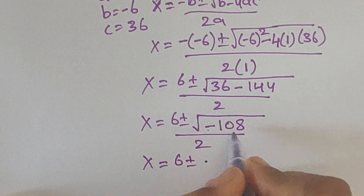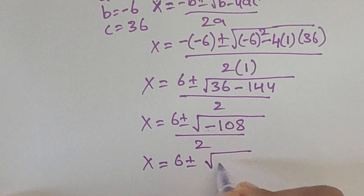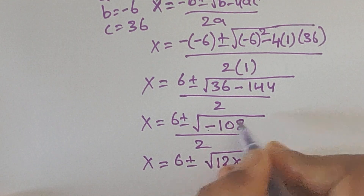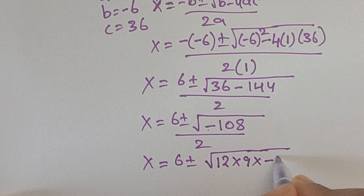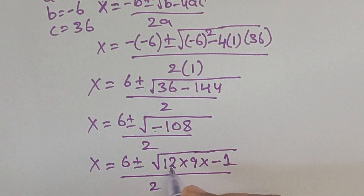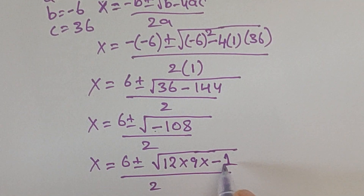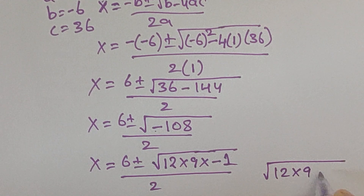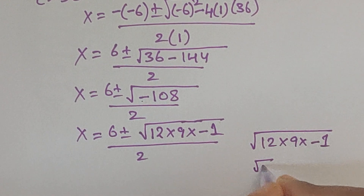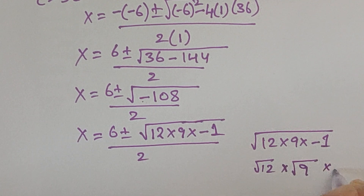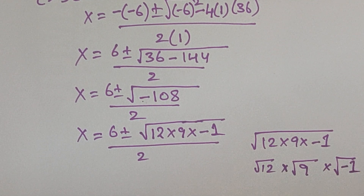We can write minus 108 as 12 times 9 times minus 1. So the square root becomes square root of 12 times square root of 9 times square root of minus 1.